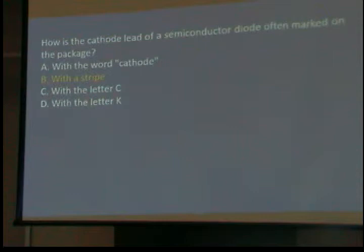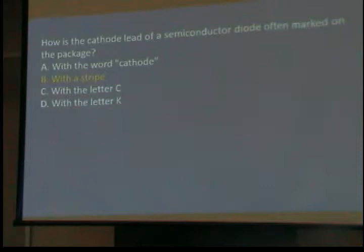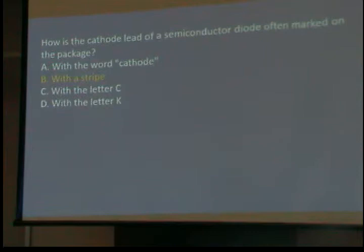How is the cathode lead of a semiconductor diode often marked? A diode can look like a little glass bead with two wires, or a larger molded plastic package. One thing consistent is the cathode end has a stripe — on the glass bead it's a black stripe; on a gray or brown plastic package it's a white stripe. That's how you tell. If you wire it the wrong way, an LED won't light. The stripe is the indicator.